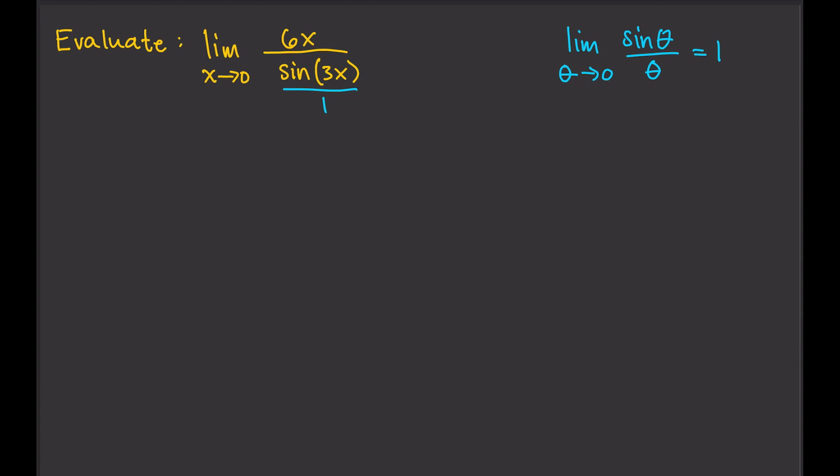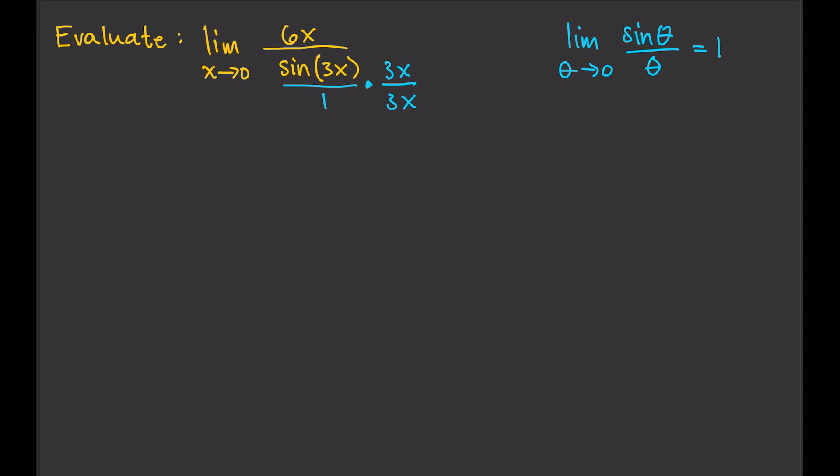Well, we can just multiply, again, multiply that by 3x over 3x. What this does is, this is going to give us a 3x in the denominator of sine 3x. That is equal to the limit as x approaches 0 of 6x over 3x times sine of 3x divided by 3x. And that's exactly what we want.